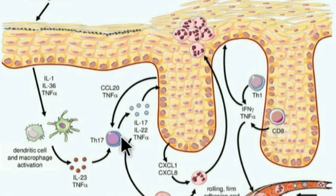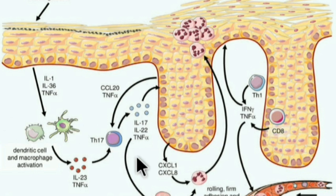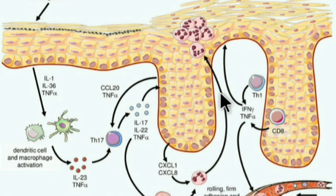Cathelicidin LL37 binds to extracellular self-DNA released from dying cells and converts the self-DNA into a potent stimulus for plasmacytoid dendritic cells, which in turn secrete type 1 interferons and trigger an auto-inflammatory cascade.